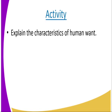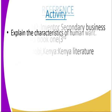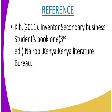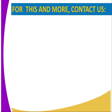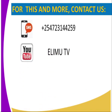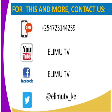Activity: Explain the characteristics of human wants. Reference: KFB 2011, Invent A Secondary Business Student Book One, Third Edition. If you have any questions, you can reach us through SMS, YouTube, Facebook, and also Twitter. Stay tuned.